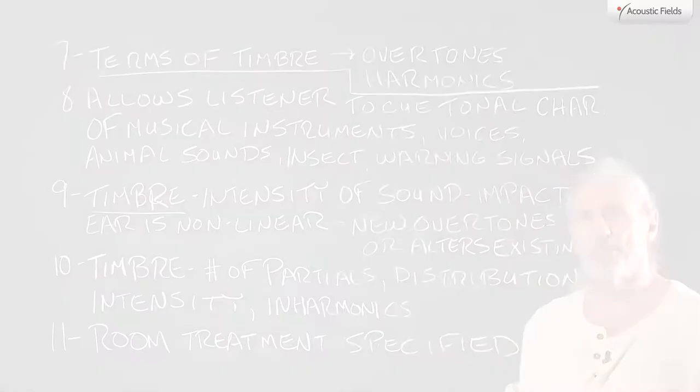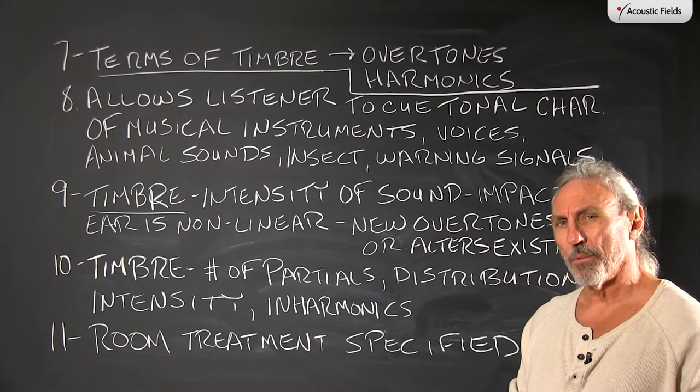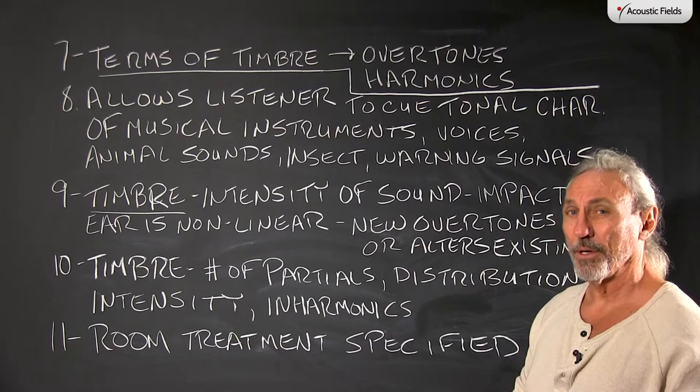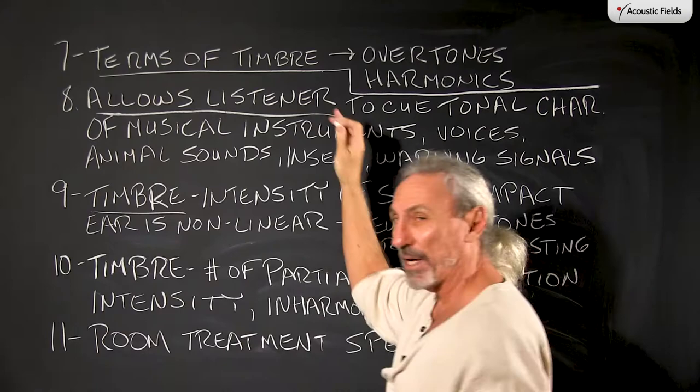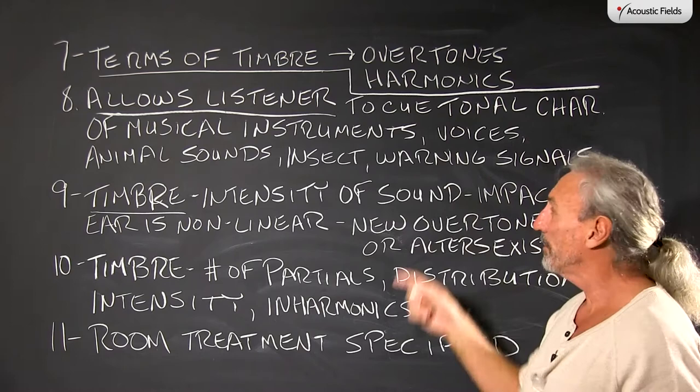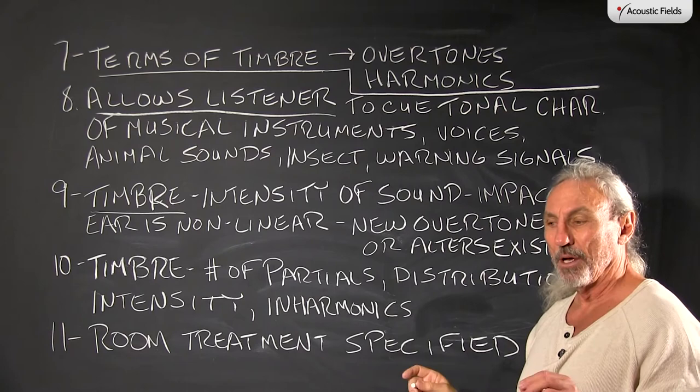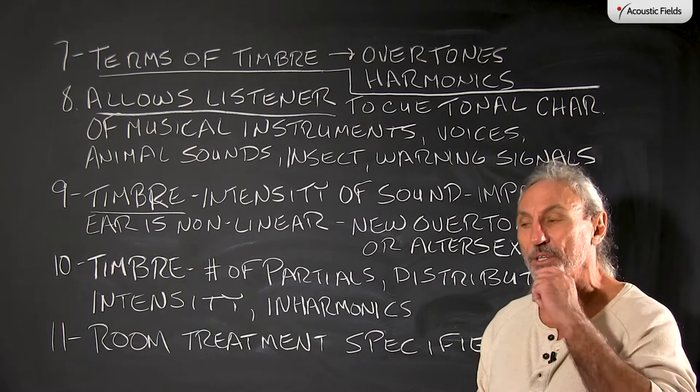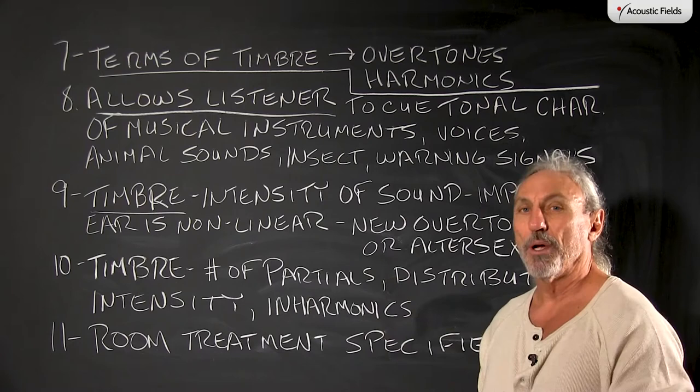Back to our terms of timbre — what are the two main areas of timbre that we should look for? It's all about overtones and harmonics, fundamentals and harmonics. These fundamentals and harmonics allow us as listeners to cue and get the tonal differences of things: musical instruments, voices, animal sounds, warning signs — all of this is in the overtones and harmonics. That's why I constantly preach that you have to get the middle frequencies right, because what most people do is they just smother those mid-range frequencies — they smother the overtones and the harmonics.